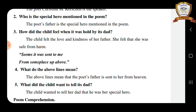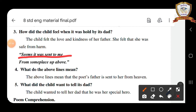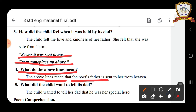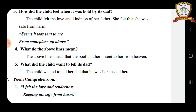Fourth question — read the poem lines: 'Since it was sent to me from someplace up above.' What do the above lines mean? The above lines mean that the poet's father is sent to her from heaven.